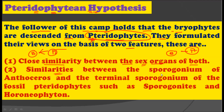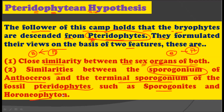Second, there is a similarity between the sporogonium of Anthocerotae and the terminal sporogonium of fossil pteridophytes such as Sporogonites and Horneophyton. The sporogonium of Anthocerotae, which is a bryophyte, shows close resemblance with these fossil pteridophytes. Based on these two points, the pteridophytean hypothesis says pteridophytes were ancestors of bryophytes.